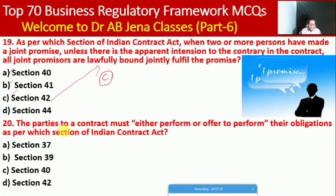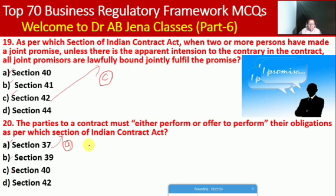Next MCQ: the parties to a contract must either perform or offer to perform their obligations as per which section of the Indian Contract Act? Whether Section 37, 39, 40, or 42. Here A is the right option — Section 37 of the Indian Contract Act is applicable.